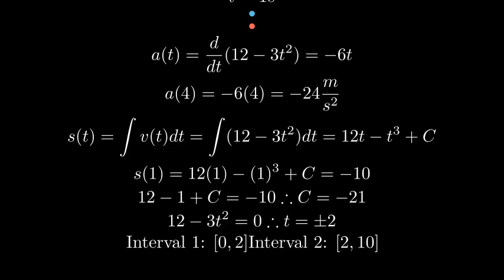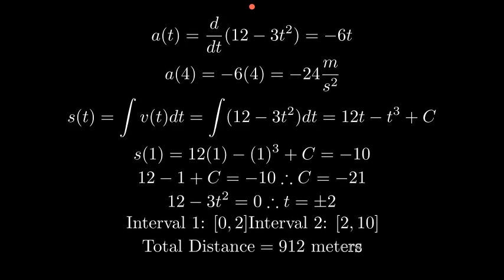The total distance is the sum of the distances traveled in each interval from 0 to 2 seconds and from 2 to 10 seconds. Adding these up, we get a total distance of 912 meters.